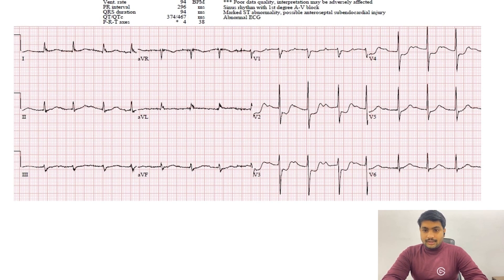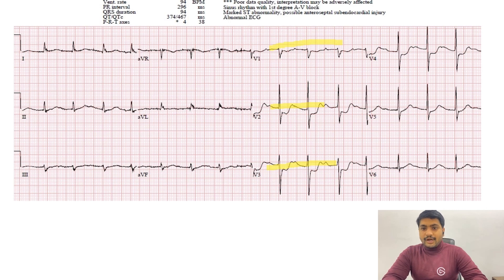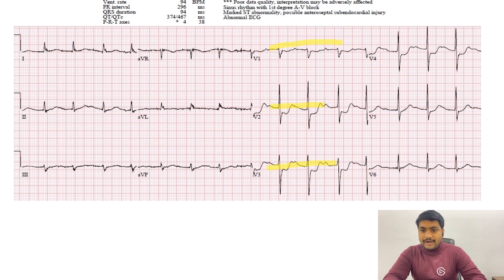So this is our first example. If we look at lead V1, lead V2, and lead V3, what we see is ST segment depression, upright T wave, and prominent R wave. This is the criteria for posterior wall MI — prominent R wave, shelf-like ST segment depression, and upright T wave.